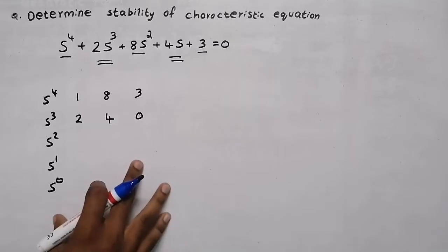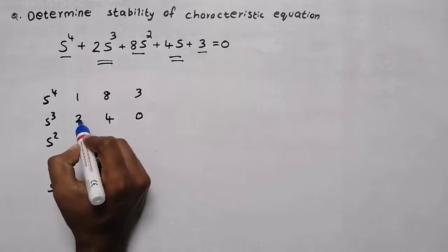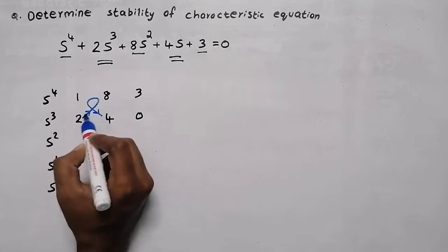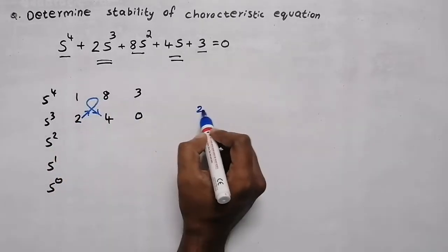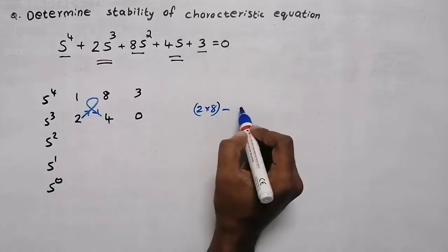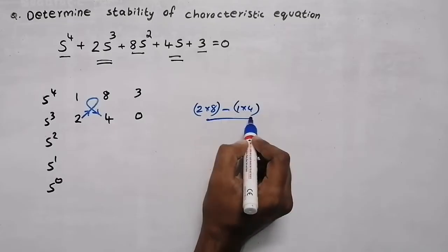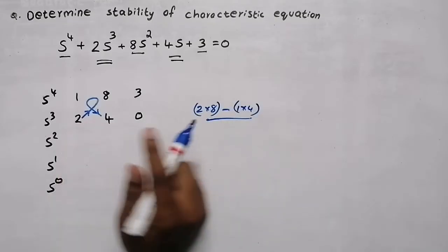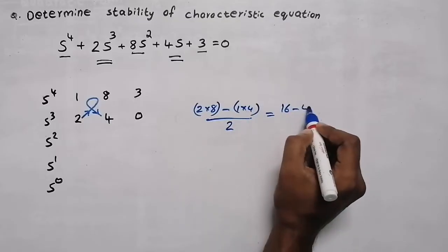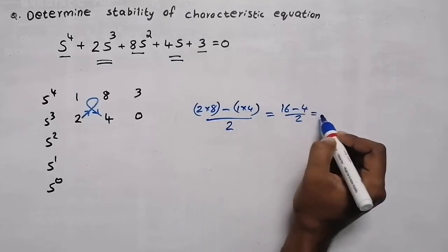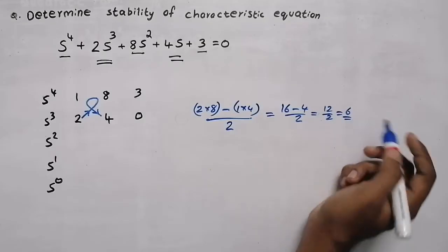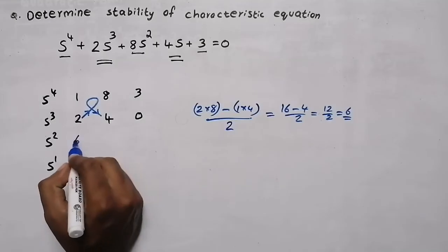Now we need to multiply. Starting from here, the direction is like this. So: 2 into 8 minus 1 into 4, divided by the starting element which is 2. That gives 16 minus 4 equals 12, divided by 2 — the answer is 6. So this element will be 6.